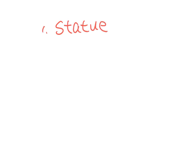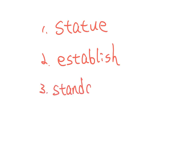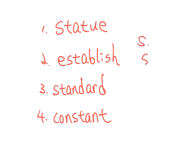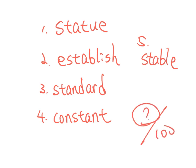随机抽考五个：statue、establish、standard、constant、stable。各位可以给自己打分数，一题20分。我们学英文到高中这个阶段，跟累积单字有绝对性的关系。